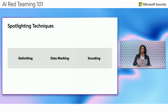The really nice thing about spotlighting is that it's applicable to capable large language models. There are three sub-families within spotlighting: the first one is called delimiting, the second is called data marking, and the third is called encoding. We'll go one by one on how you can potentially start to utilize them in your applications.